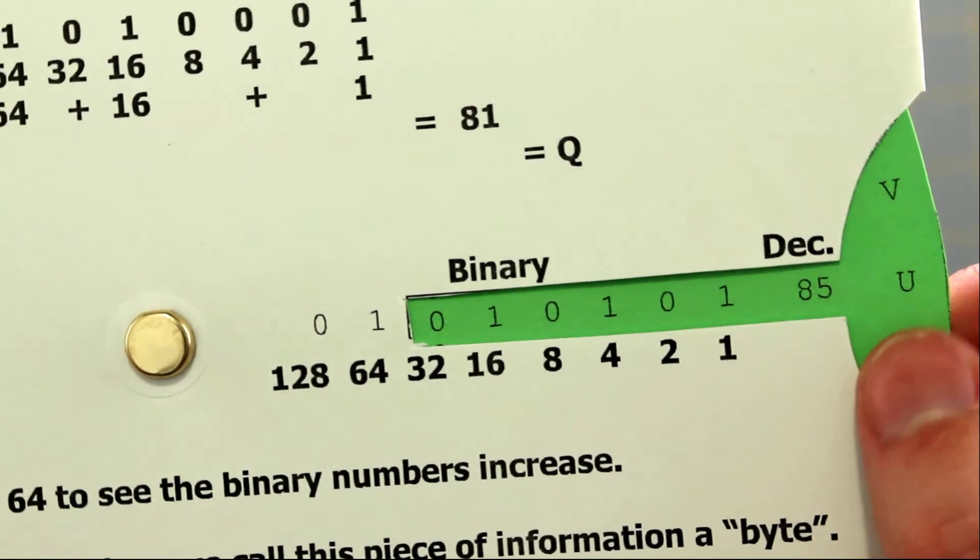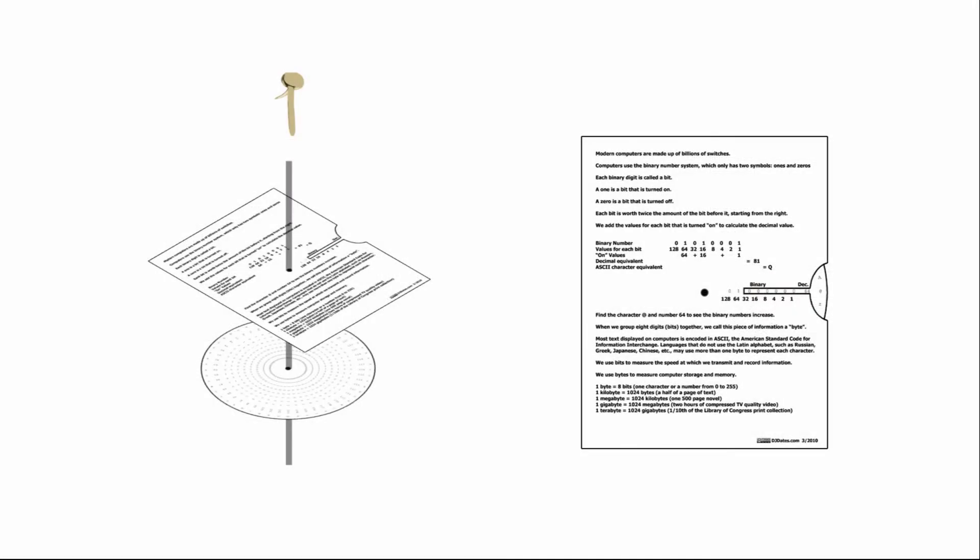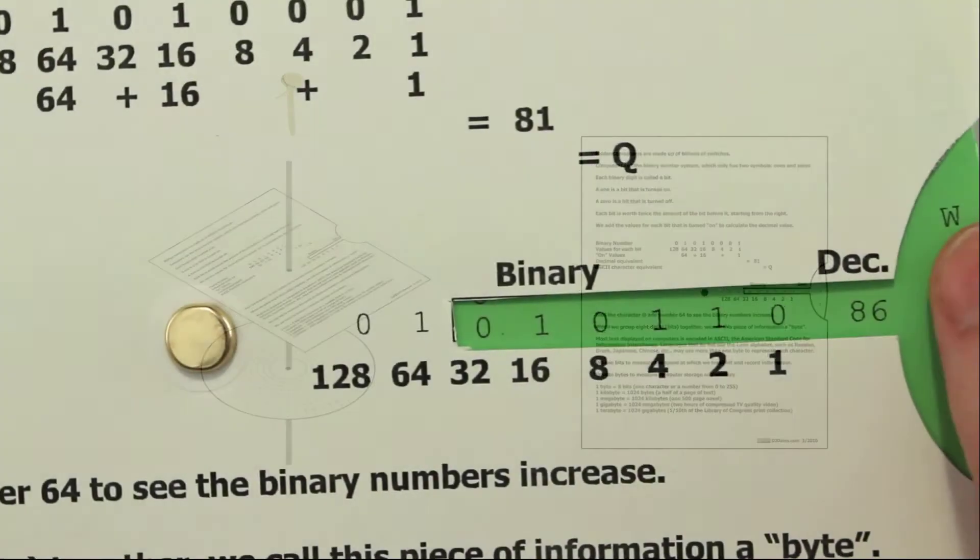To assemble the binary decoder wheel, you should print the PDFs onto card stock, cut out the sections indicated, and assemble the binary decoder wheel using a brass fastener brad and clear double-sided tape.